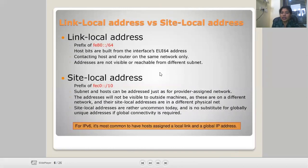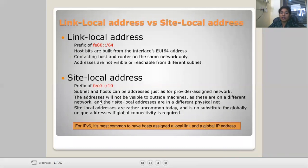Link-local address versus site-local address: A link-local address has a prefix of fe80::/64. The host bits are built from the interface's EUI-64 address, and it contacts hosts and routers on the same network — it is only visible and reachable from that part of the network. A site-local address has the prefix fec0::/48, and the host can be addressed within the provider's assigned network, but the address will not be visible outside that site.